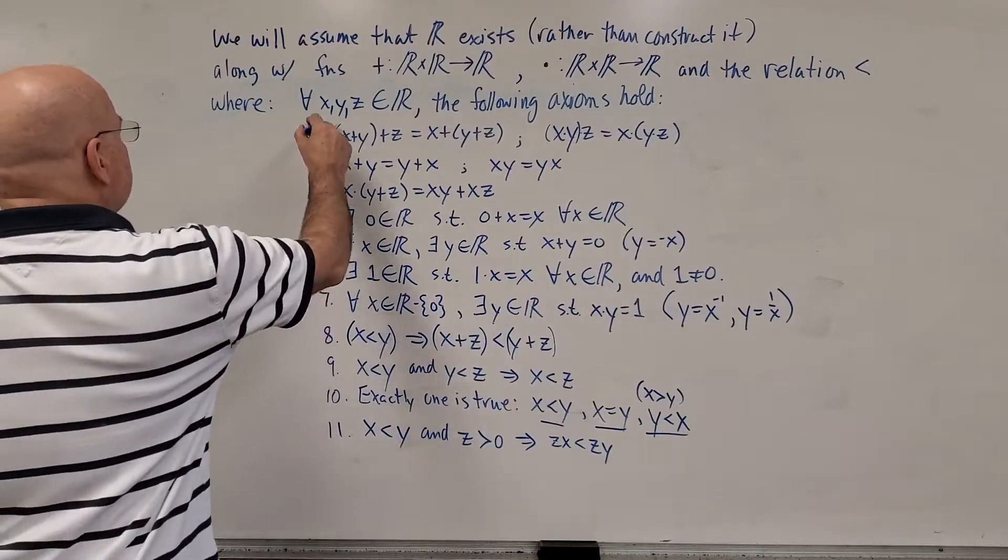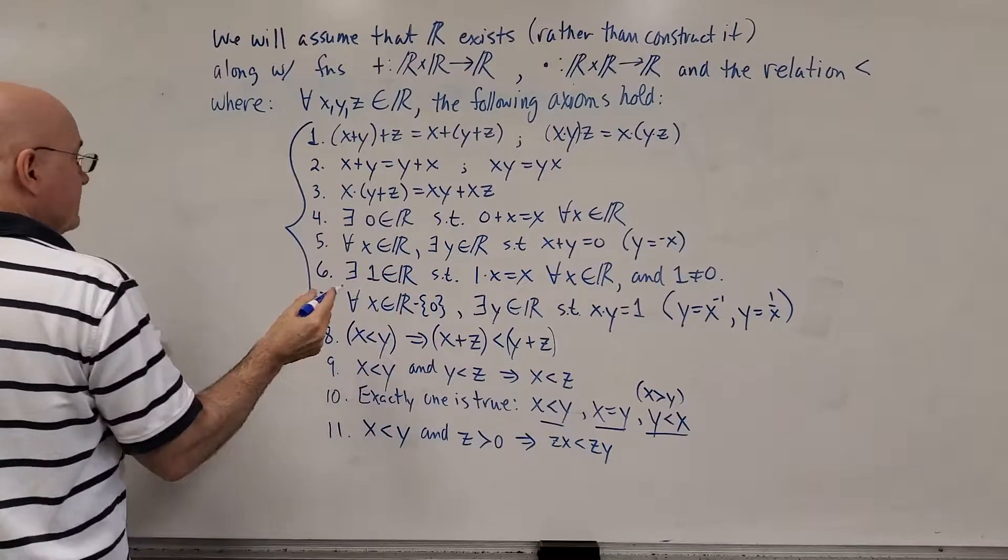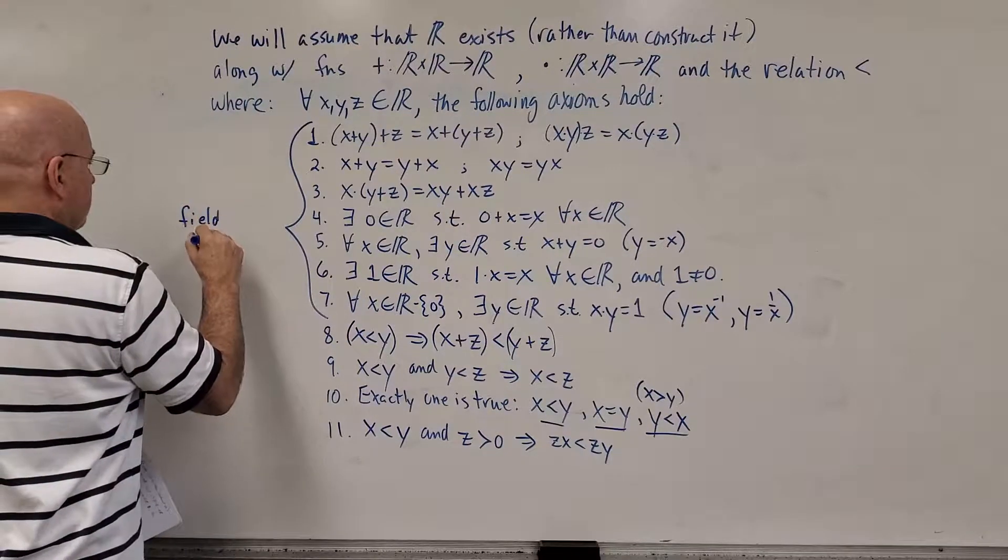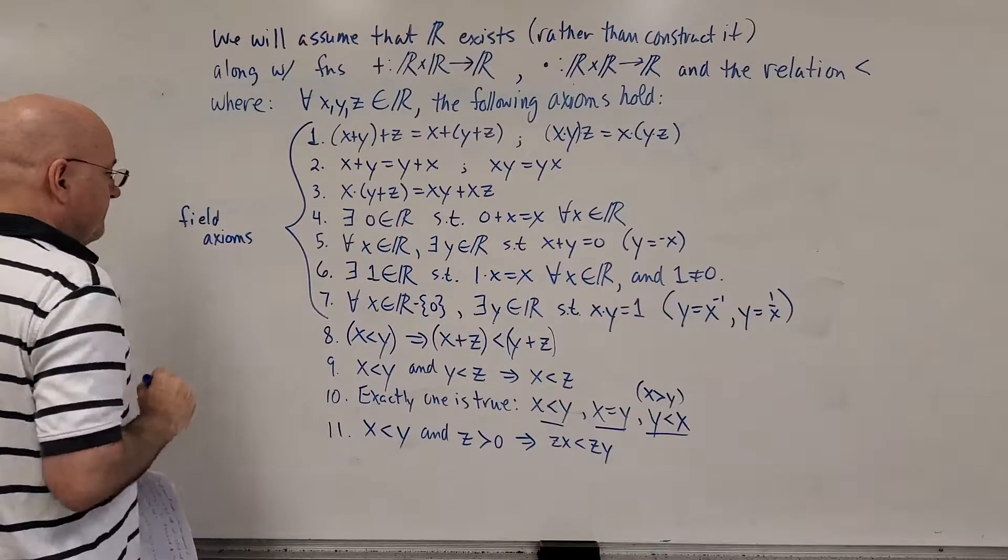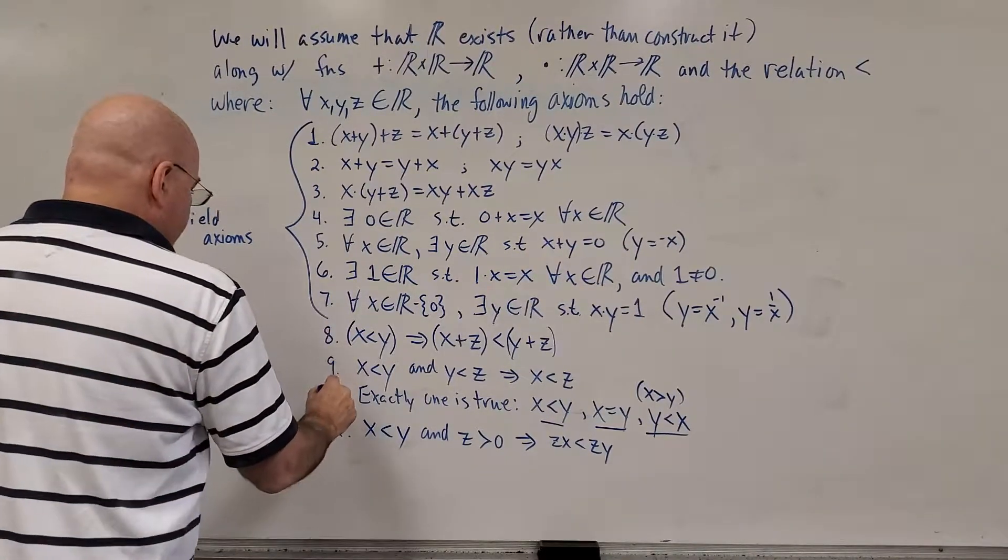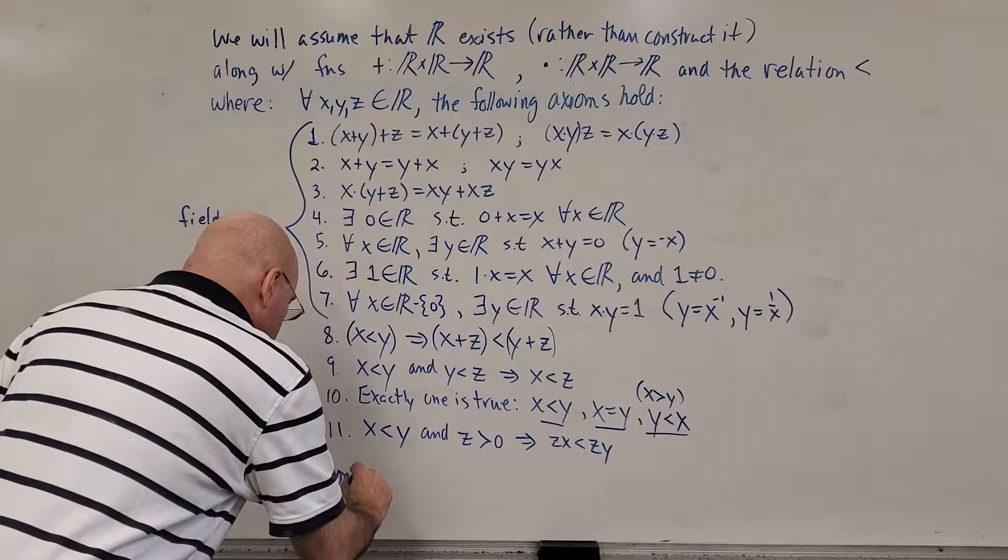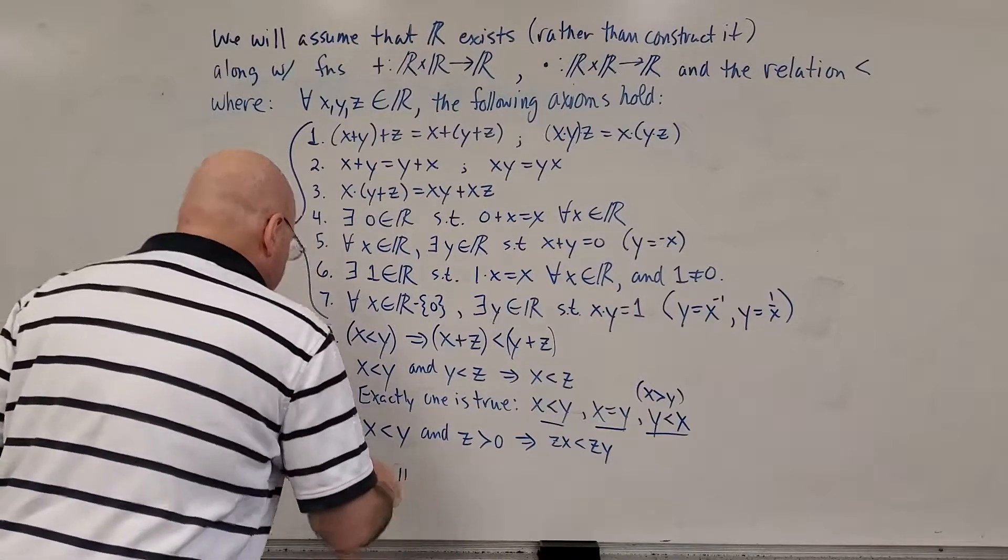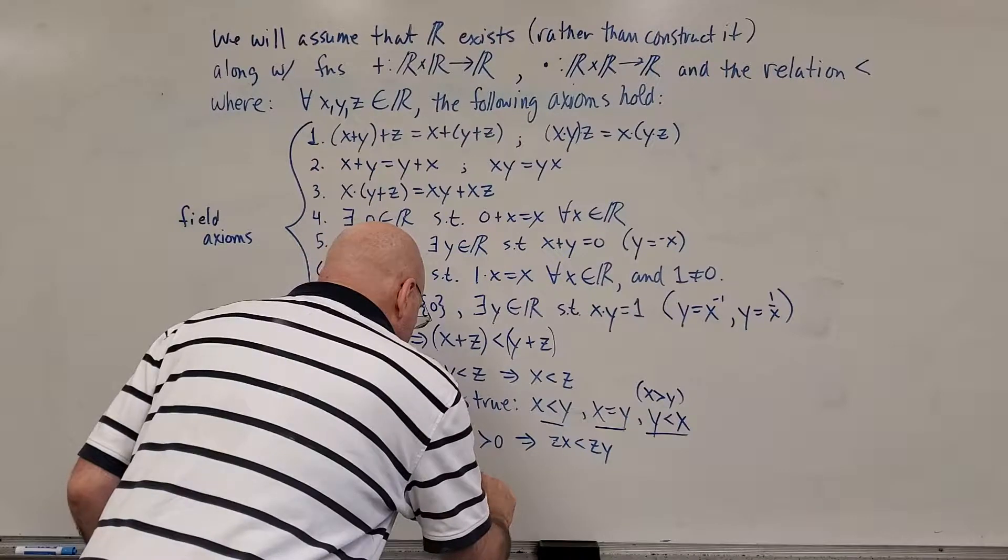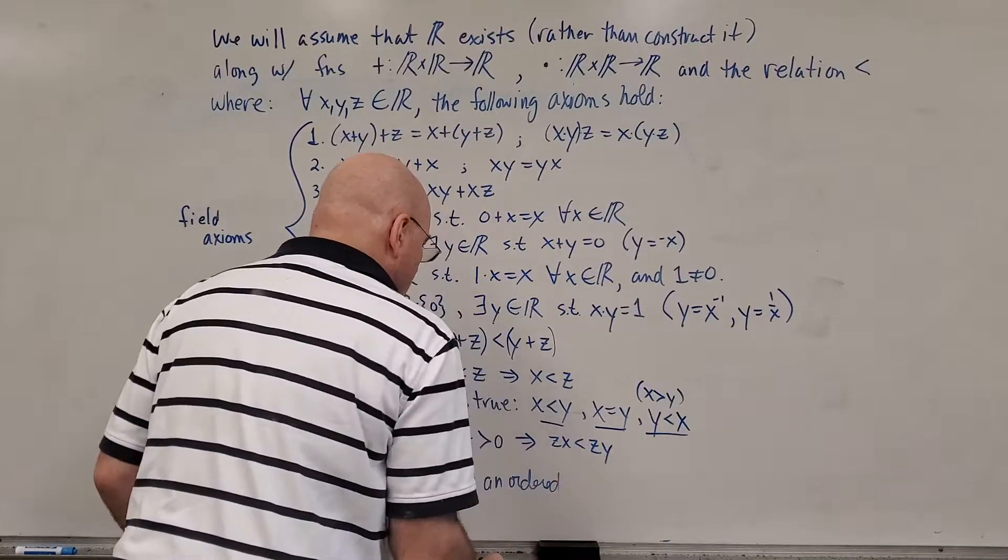Now, numbers one through seven. Those seven axioms are the field axioms. They define what it is to be a field. If we add on eight through 11, maybe I'll just say axioms one through 11. All of them define an ordered field.